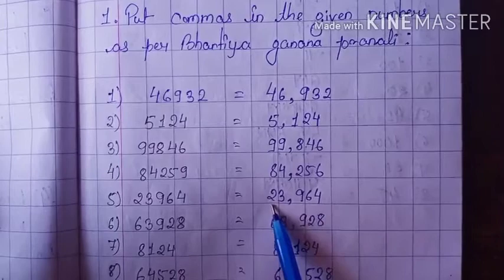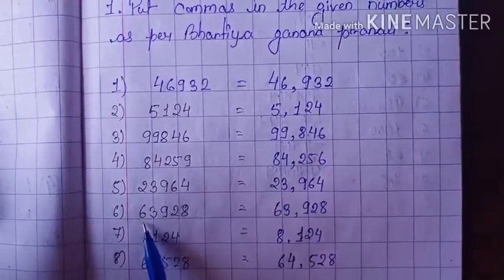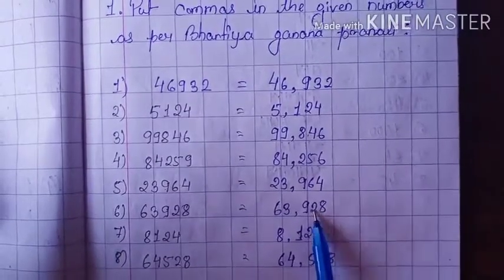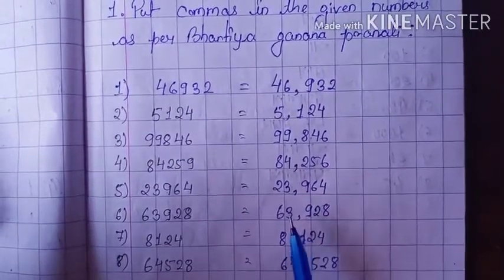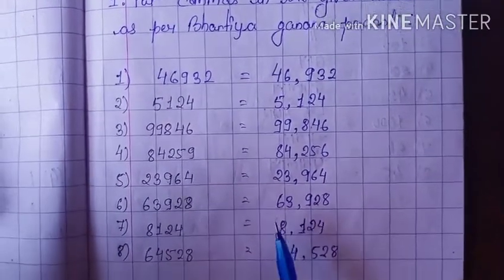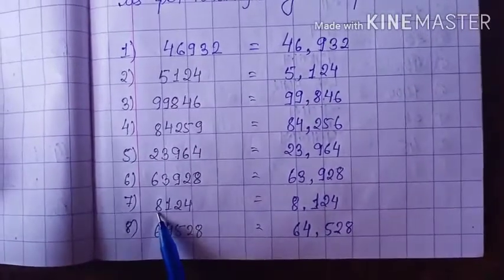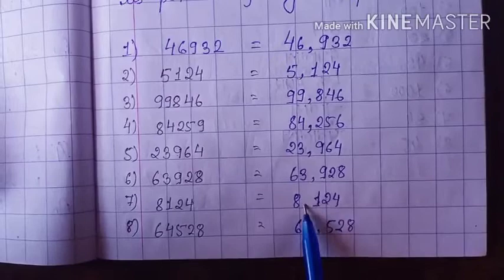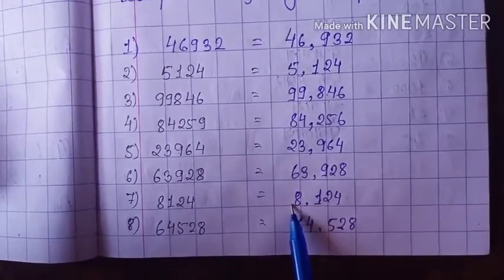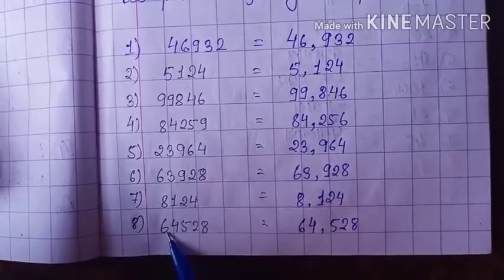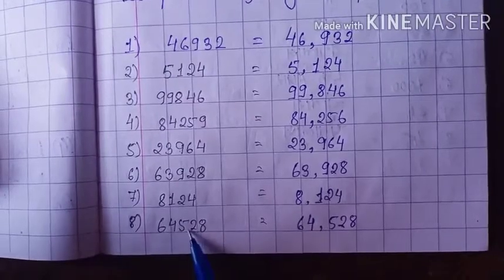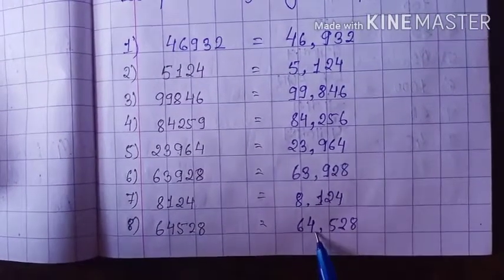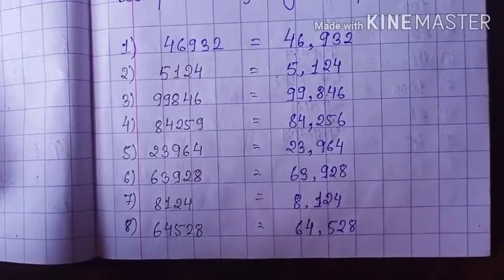Next: 8124. From the right — 4, 2, 1, comma, then 8. Next: 6464528. From the right — 8, 2, 5, comma, 4, 6. So that is question number 1.